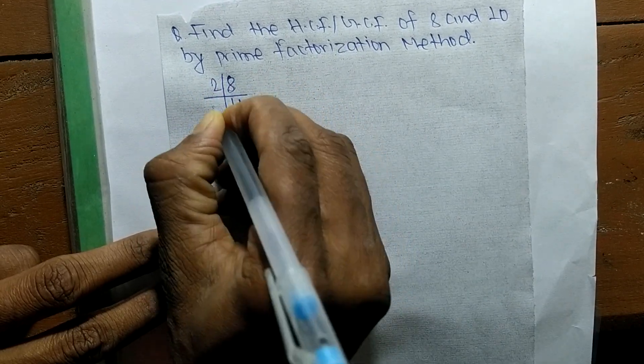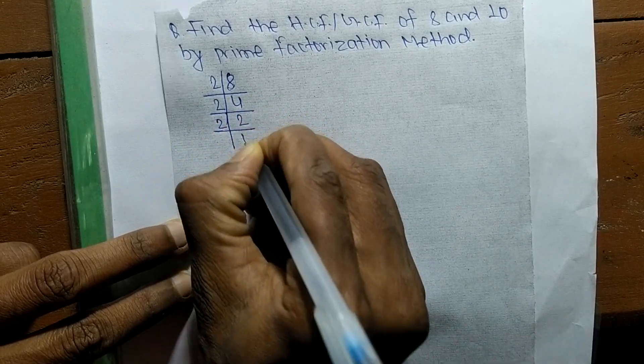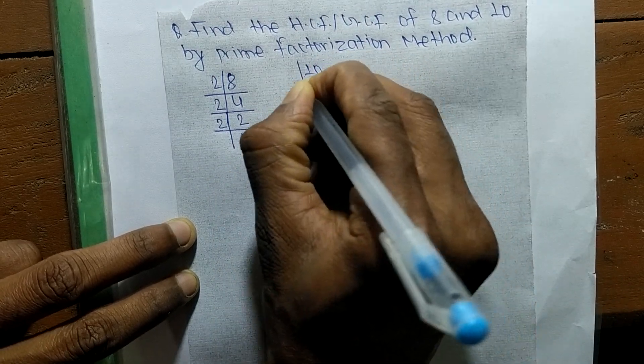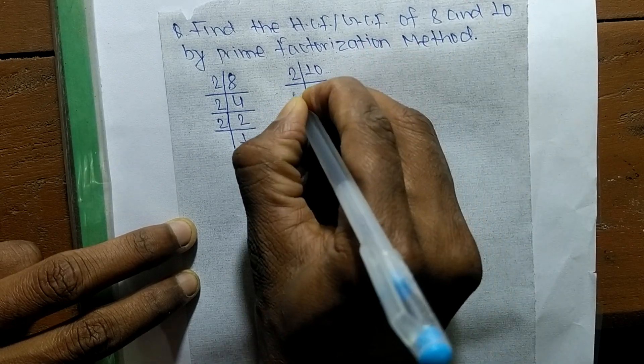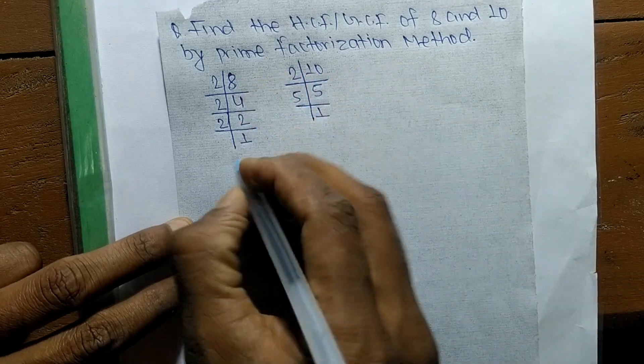Like the prime factors of 10: 2 times 5 equals 10, and 5 times 1 equals 5. So from these prime factors,